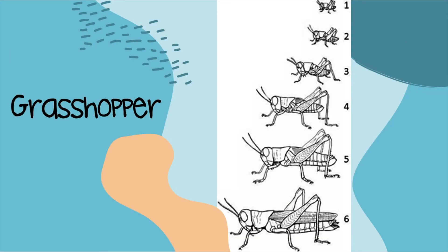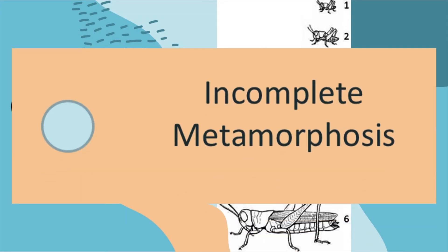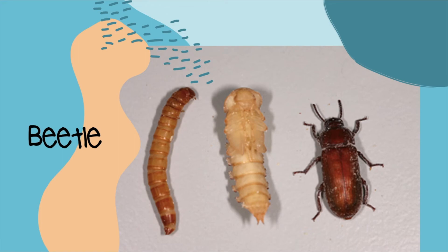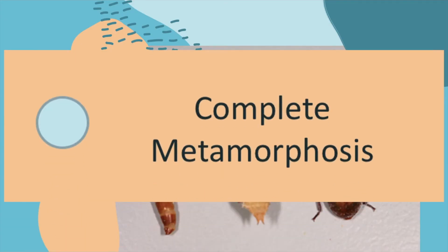What about a grasshopper? I think we might have seen a picture of this not too long ago. Does a grasshopper go through complete or incomplete metamorphosis? I don't see a larva stage in there, or any type of chrysalis or cocoon. If you said incomplete metamorphosis, you are correct. What about a beetle? Complete or incomplete metamorphosis? If you said complete metamorphosis, you are correct.